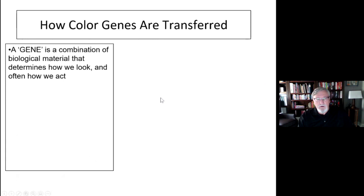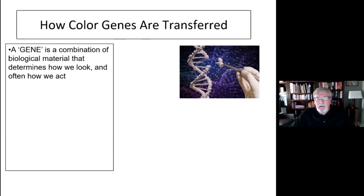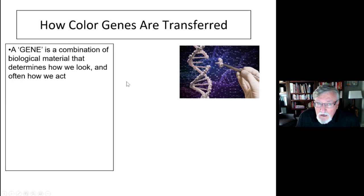Let's talk about color genes and how they're transferred. This is basic genetics. A gene is not something you can see. A gene is a combination of biological material that actually directs how we're going to look and often how we're going to act. We're only talking in this presentation about rabbit coat color genetics. A gene drives what the rabbit's coat color is going to look like.